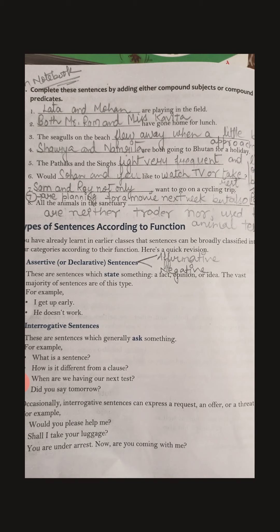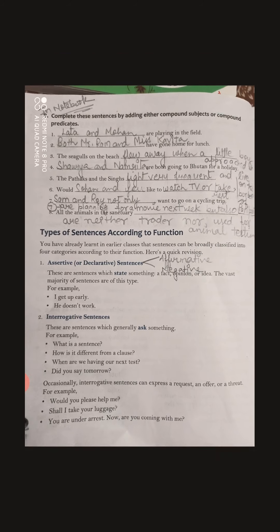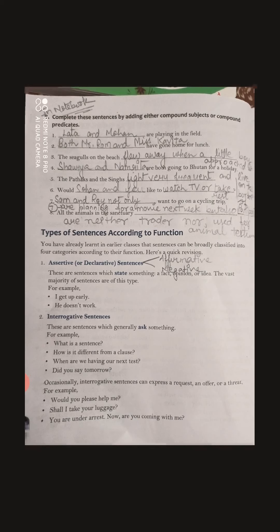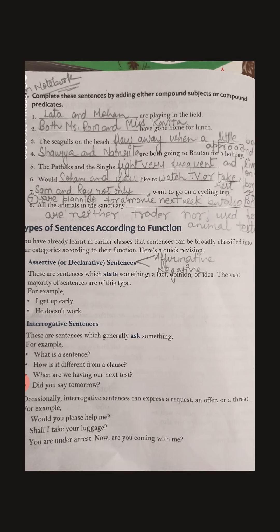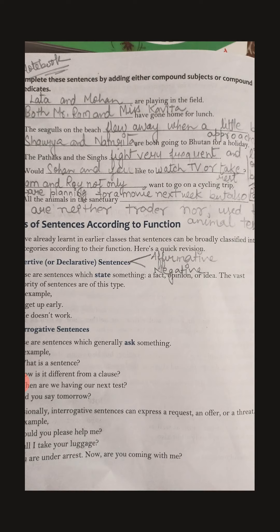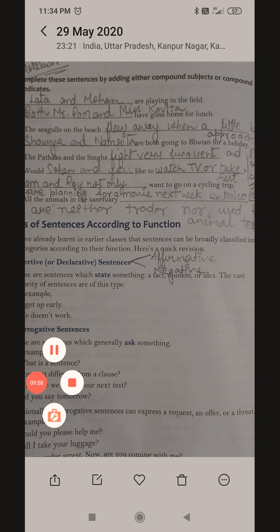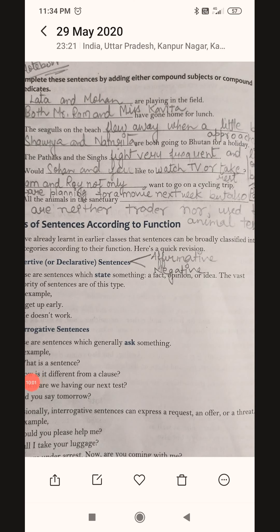For sentence two, we need a compound subject with two people, so I have used 'Both Mr. Ram and Miss Kavita have gone home for lunch.' Sentence three requires a compound predicate, meaning two actions. We know that for a compound predicate, we need two pieces of information about the subject.